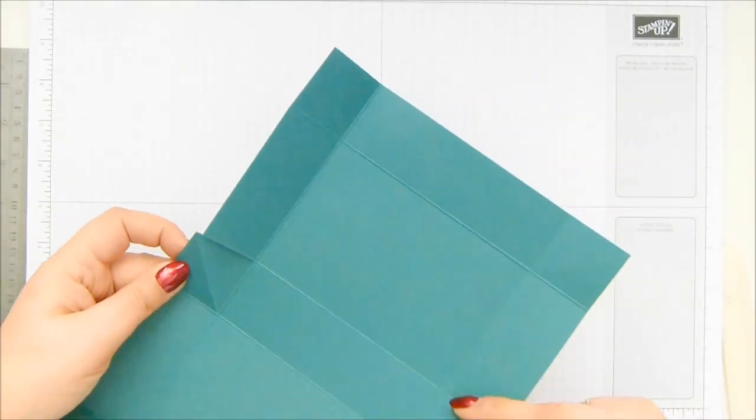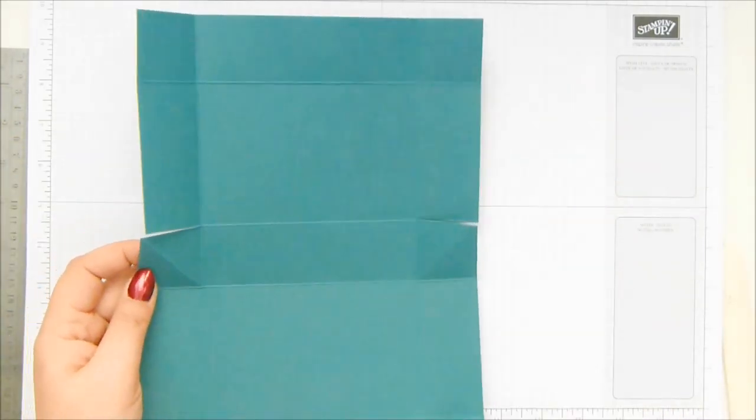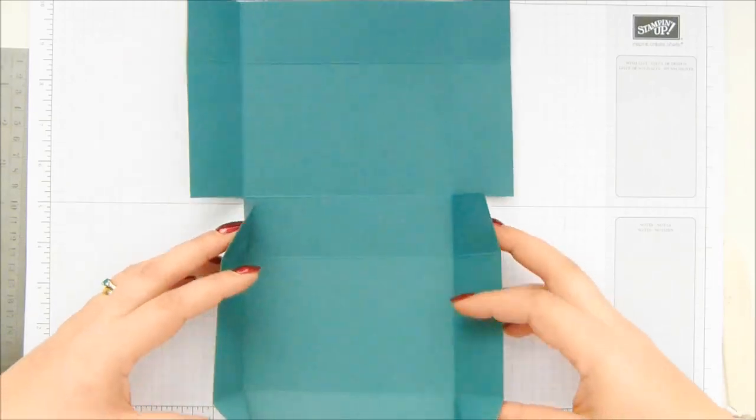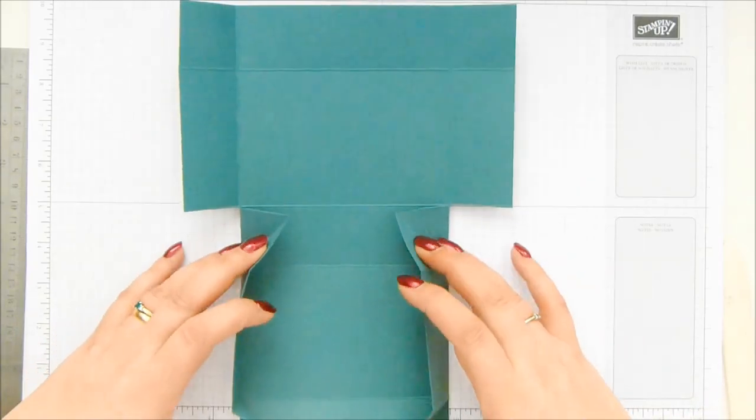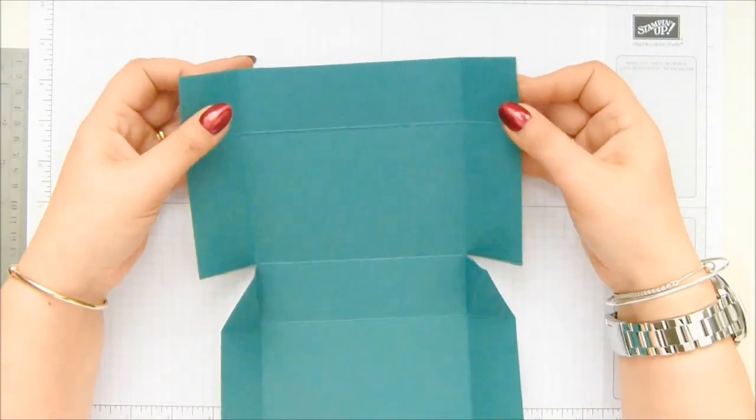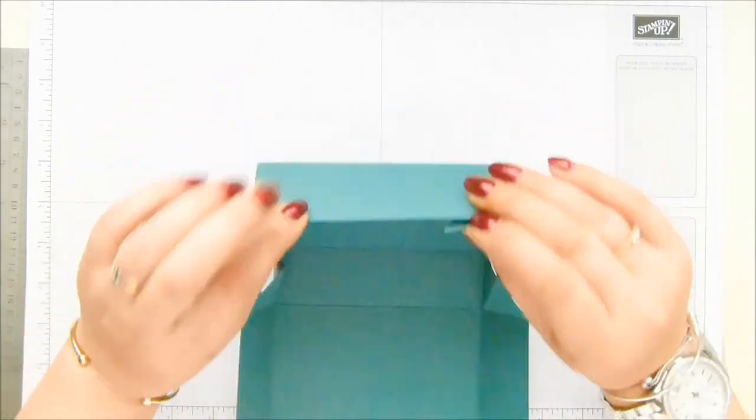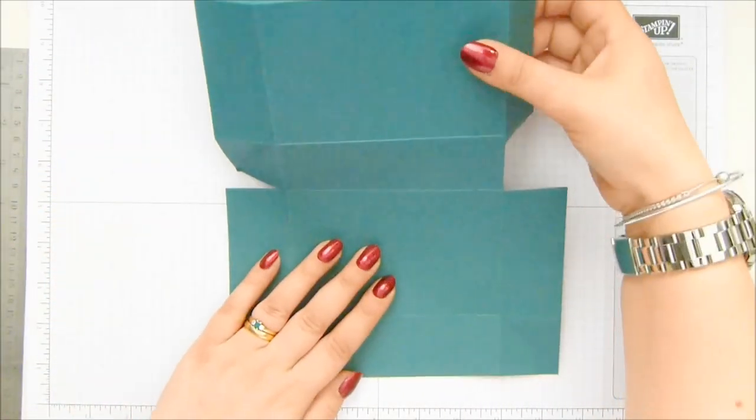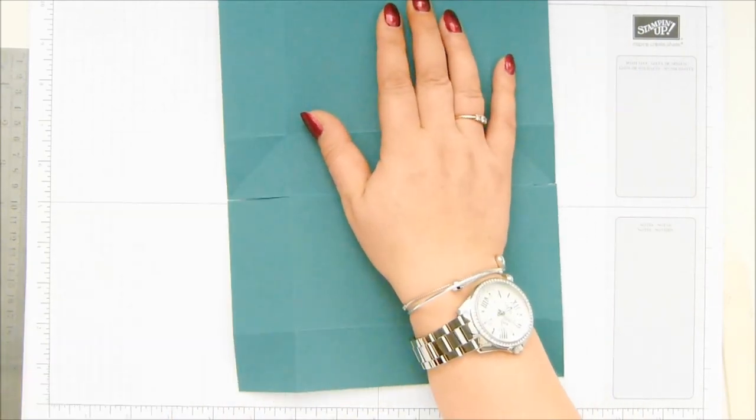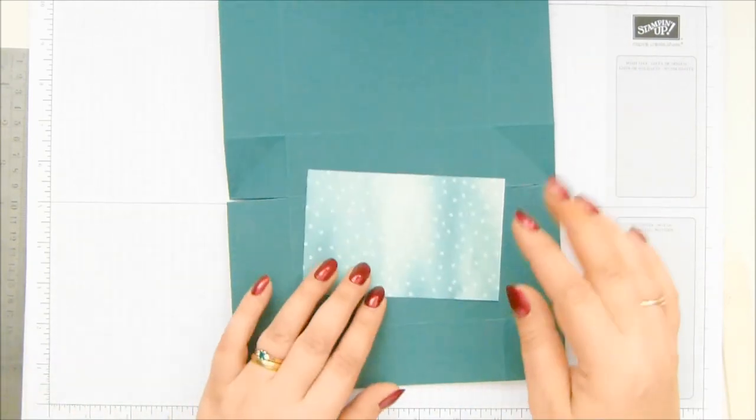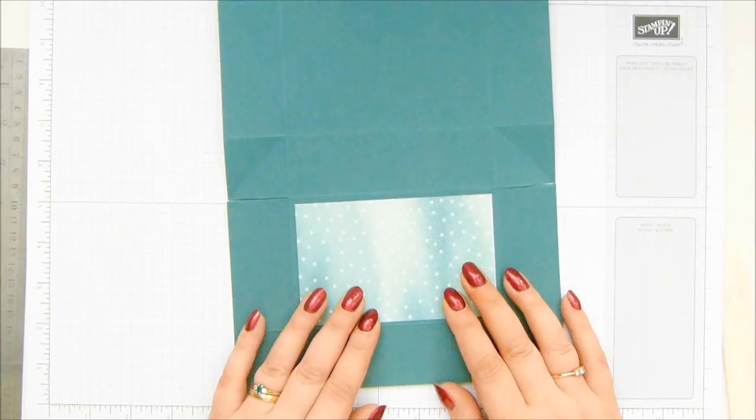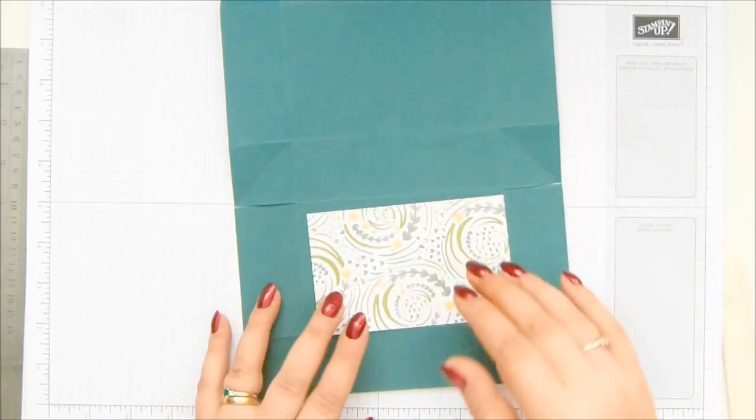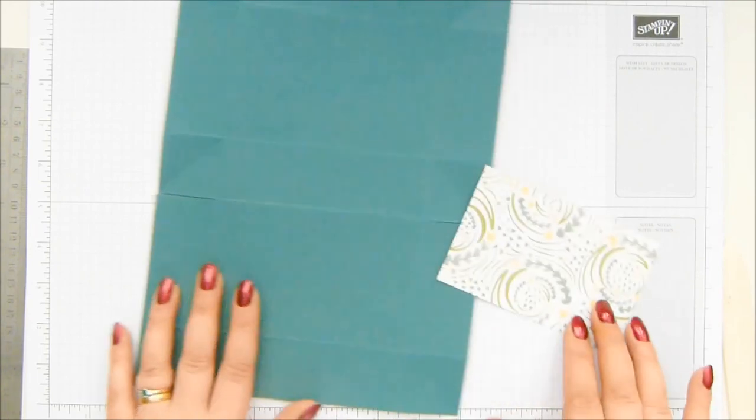So if I fold that one round as well and that one, you'll see what's going to happen. Those will form in, and then that one will do exactly the same at the top and come round to be the lid. So I want to get my designer series paper on, and as I said, I've got another one of the patterns in the paper. I love that one, and I've got a gorgeous bag coming up in a couple of weeks using that pattern, but I'm going with this one today.